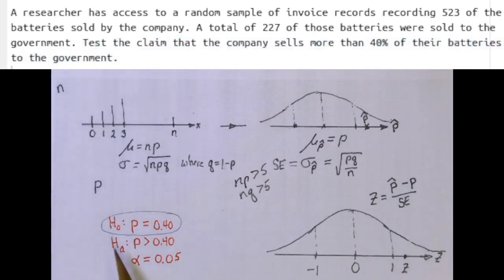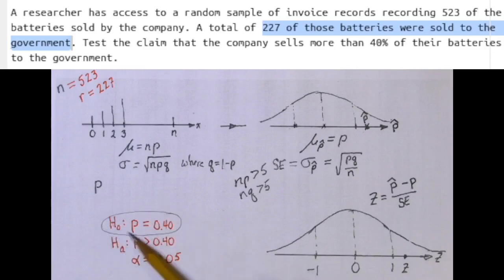Now, in a hypothesis test, we begin with the assumption that the null hypothesis is true. We know that our sample size is 523 and that our number of successes is 227. This is a clever ploy to assume the null hypothesis is true because now we can say that this P value is 40%. And once we know that P value...